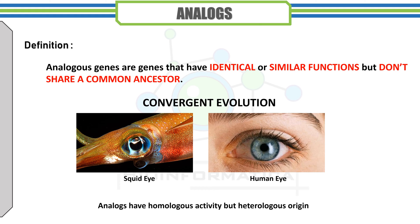Analogous genes are those genes that have identical or similar functions but don't share a similar origin or ancestors. The implication is that analogous proteins followed evolutionary paths from different origins to converge upon the same activity — thus analogous genes or proteins are considered a product of convergent evolution. For example, the functions of both human and squid eyes are the same but their origins are different. So we can say analogues are homologous in activity but heterologous in origin.